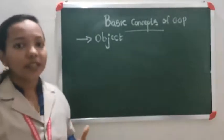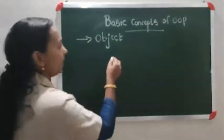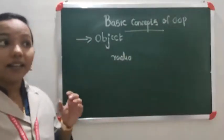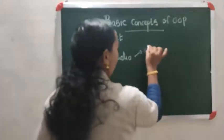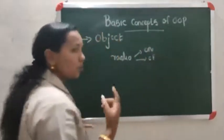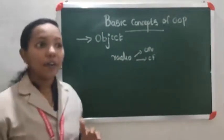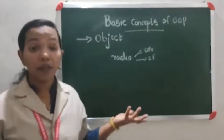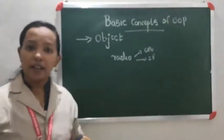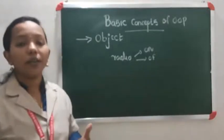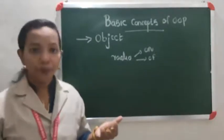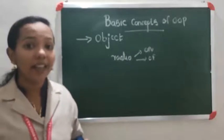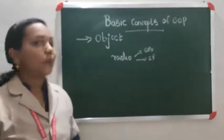So, two categories: characteristics and also function. We can also use a radio as an object. The states of radio are on and off — we can switch on or switch off the radio. The functions of a radio include: we can increase the volume, decrease the volume, switch it on, switch it off. These are all the activities performed by the radio.